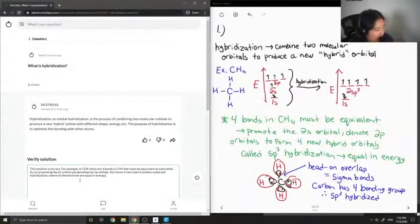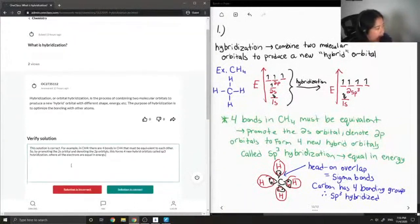Okay, so I said that this solution is correct. For example, in CH4, there are four bonds that must be equivalent to each other. So by promoting the 2s orbital and demoting the 2p orbitals, this forms four new hybrid orbitals called sp3 hybridization, where all the electrons are equal in energy.